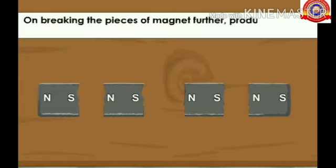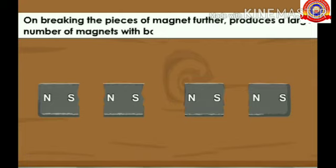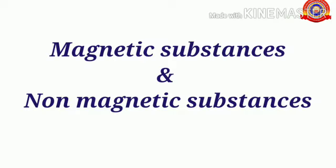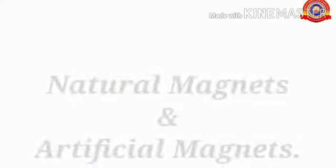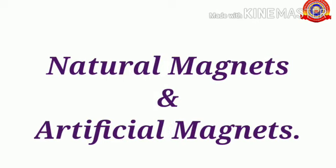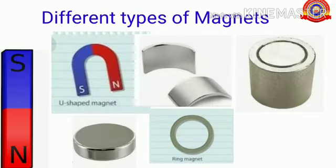So students, in this chapter first we discussed about magnetic substances and non-magnetic substances. After that we discussed about natural magnets and artificial magnets. Magnets that occur from nature are called natural magnets. Magnets made of iron, steel, etcetera are artificial magnets.